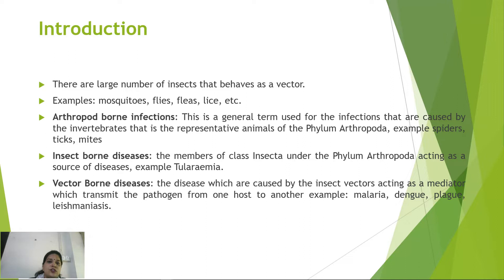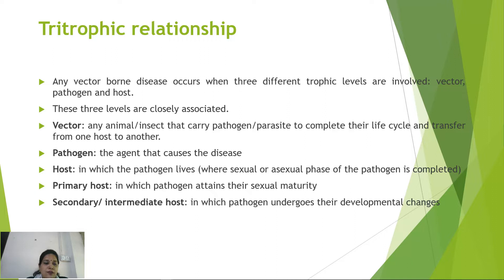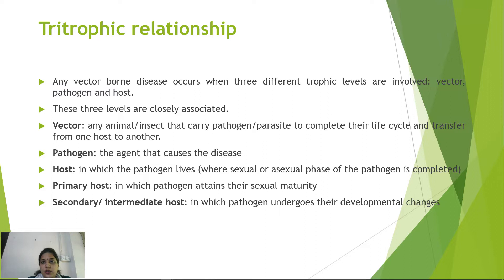Examples of vector-borne diseases include malaria, dengue, plague, and chikungunya. There is a tri-trophic relationship involving three levels: the vector, the pathogen, and the host. The vector is the mediator that carries the pathogen or parasite to complete its life cycle and transfers it from one host to another. The pathogen is the agent causing disease — it may be a protozoan, a virus, or a bacterium.